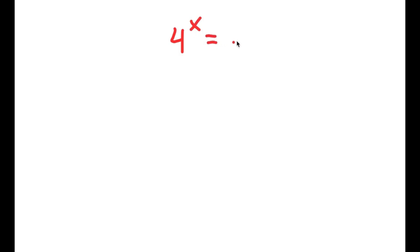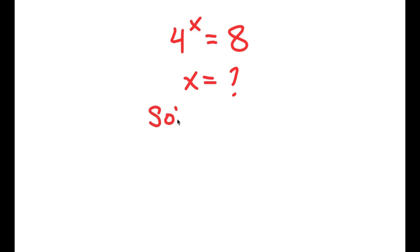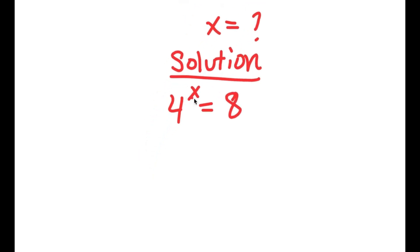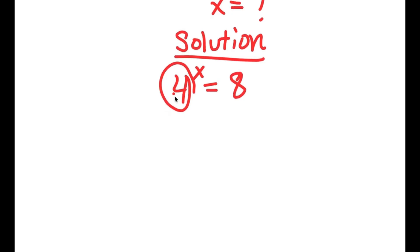In this problem, I have 4 to the power of x is equal to 8, and I want to find the value of x. For my solution, I start by rewriting the problem. Now 4 is the same thing as 2 squared, so I'm going to rewrite this as 2 squared to the power of x — all I did was replace 4 with 2 squared.